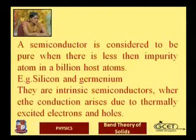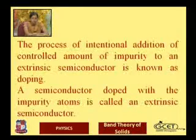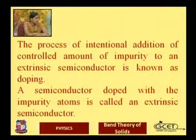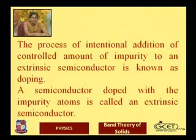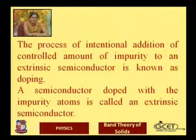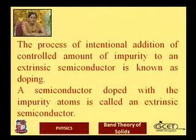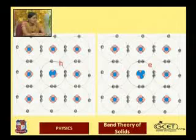In intrinsic semiconductors, conduction arises due to thermally excited electrons and holes. The intentional addition of a controlled amount of impurity to a semiconductor is known as doping. When you deliberately add external impurity into an intrinsic semiconductor, it is called doping, and the resulting material is called an extrinsic semiconductor.